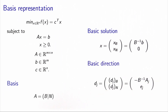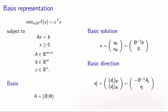We have also seen how to calculate a basic direction. A basic direction is obtained when you take variable j, which is out of the basis, and make it positive. The non-basic part of the direction is composed of vector eⱼ, which has all zeros except a one at position j. The basic part of the direction is calculated as −B⁻¹Aⱼ. This is what we have seen in previous chapters.